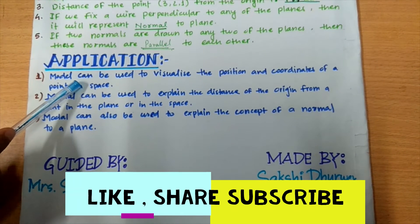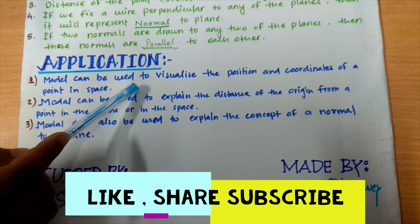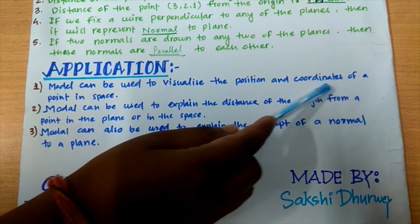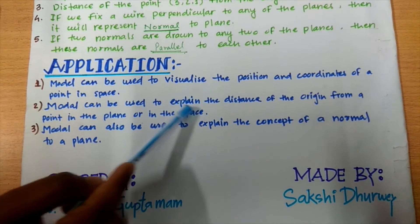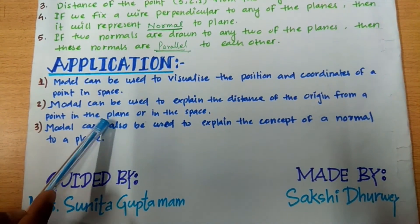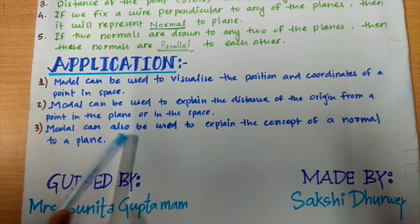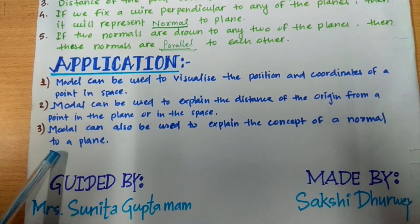The application of this activity is model can be used to visualize the position and coordinates of a point in space. Model can be used to explain the distance of the origin from a point in the plane or in the space. Model can also be used to explain the concept of a normal to a plane.